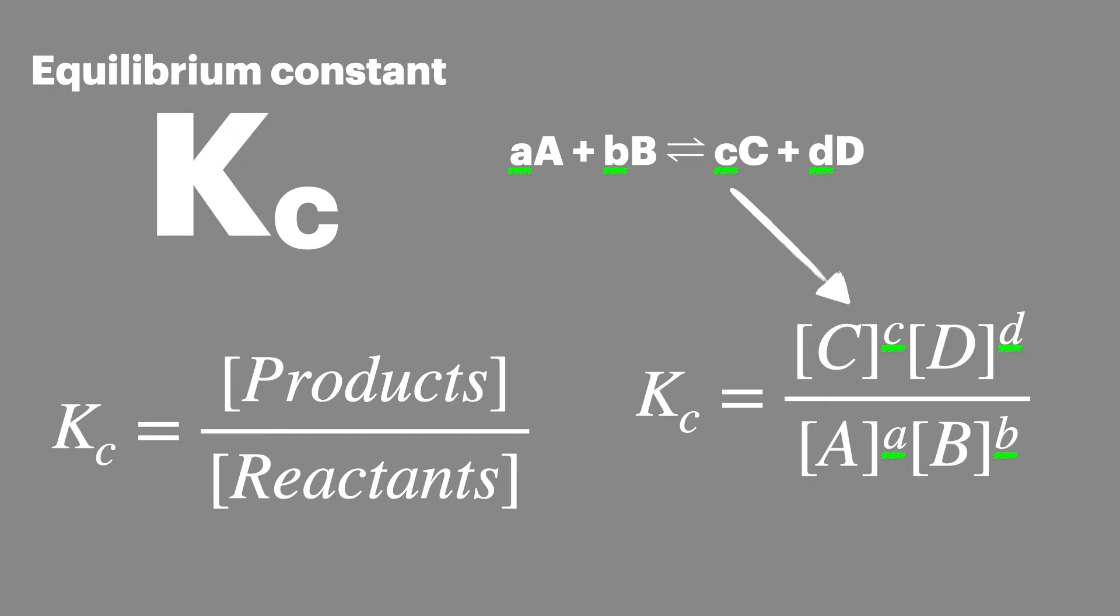We use square brackets in the expression to show that all the values are concentrations so have the unit moles per decimetre cubed. This is especially important when answering exam questions and you really need to make sure the brackets are clearly square.